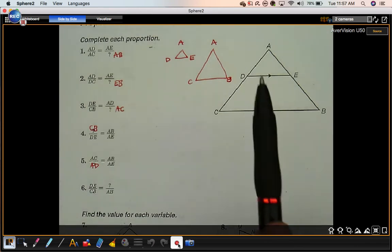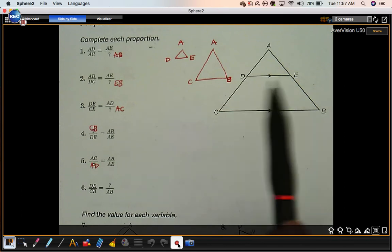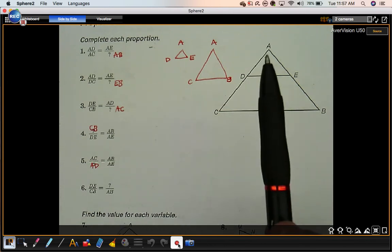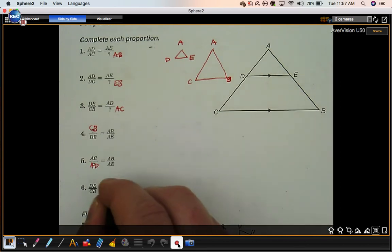Number 6. Bottom to bottom, little to big, bottom to bottom. Equals something compared to this right side. It's going to be the other right side.